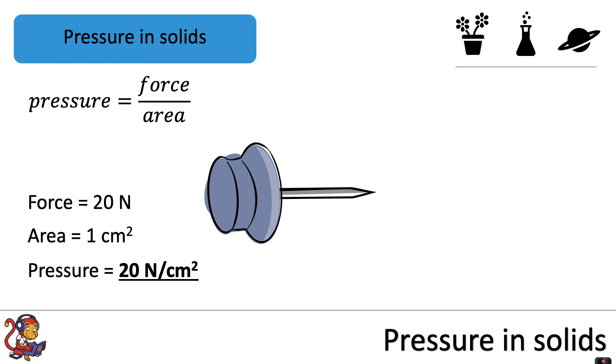However, the end of the drawing pin that pushes into the notice board has a much smaller area. So if we're pushing with a force of 20 newtons still, but the area is 0.008 centimeters squared, then the pressure applied to the notice board is a lot greater: two and a half thousand newtons per centimeter squared.